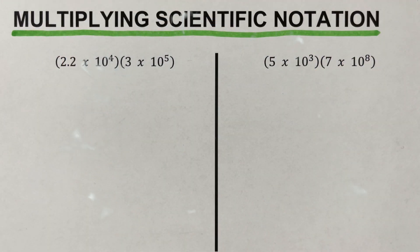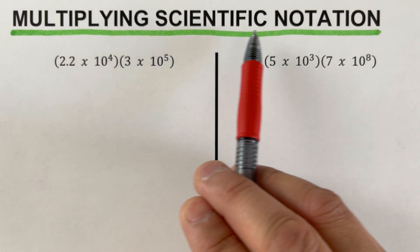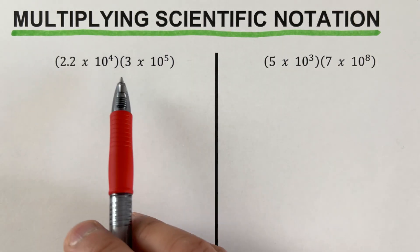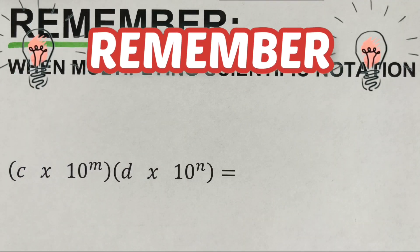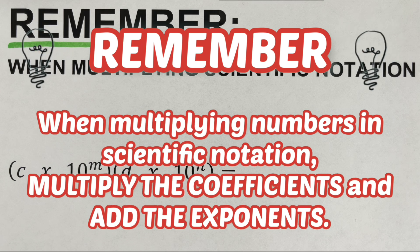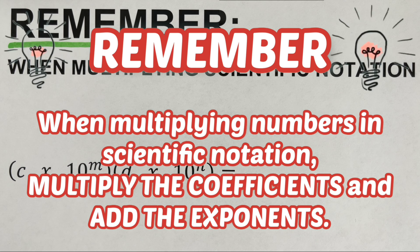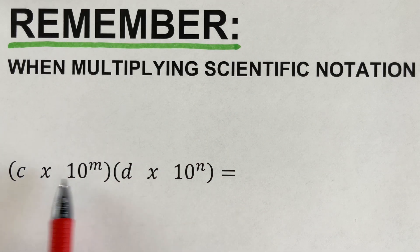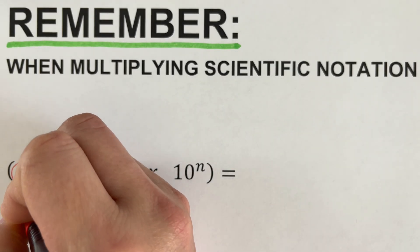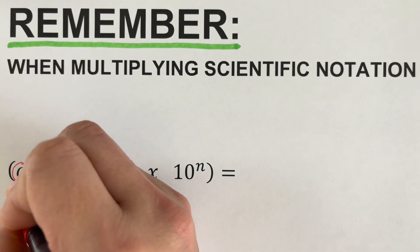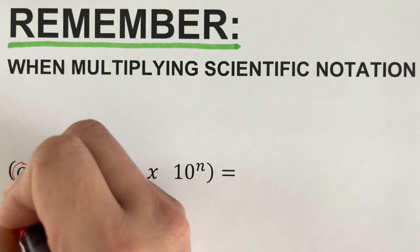Hello everyone. In this video we will be multiplying scientific notation. Before we go over these examples, let's establish the basic rule. The general rule in multiplying scientific notation is that we multiply the coefficients and add the exponents. Looking at this general scientific notation multiplied together, we multiply their coefficients — c and d shall be multiplied together.